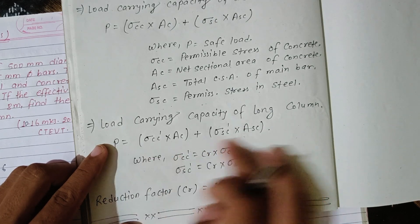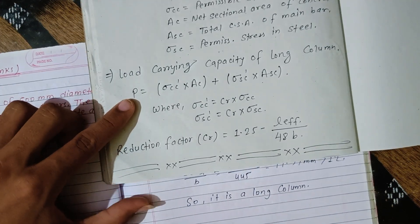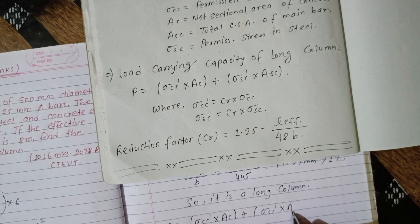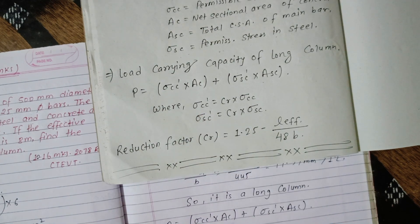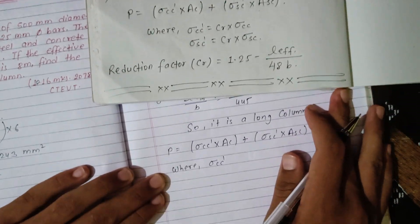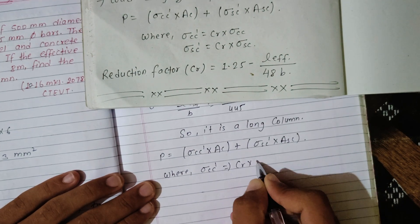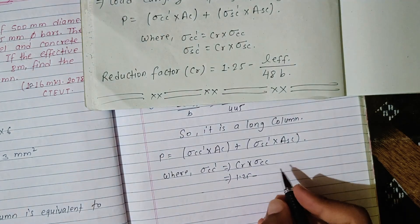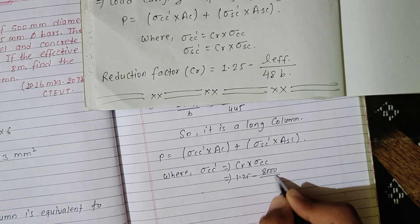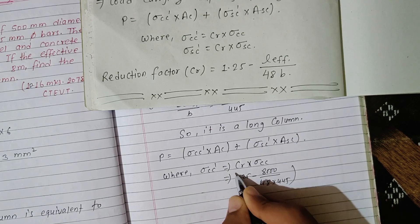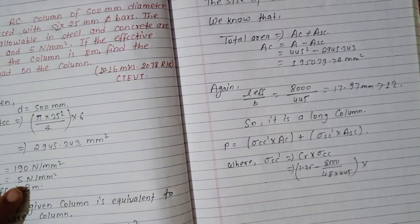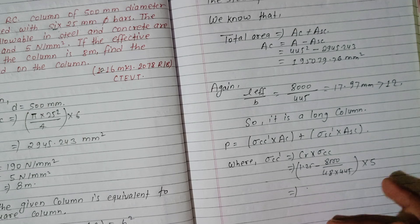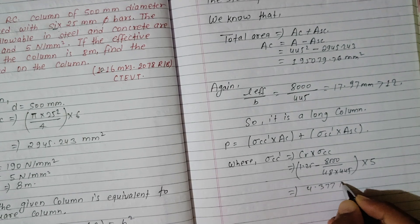For a long column: P = σ_cc' × A_c + σ_sc' × A_sc. First, calculate σ_cc' using the reduction factor Cr: σ_cc' = Cr × σ_cc, where Cr = 1.25 − (L_eff / 48B) = 1.25 − (8000 / (48 × 445)). This gives σ_cc' = 4.377 N/mm².